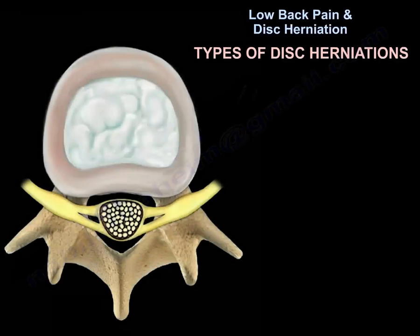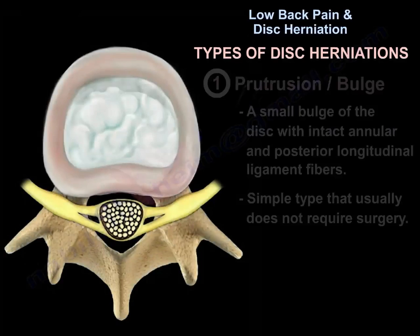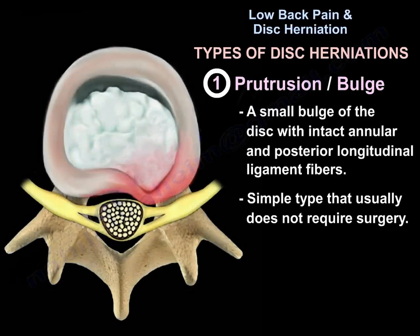There are three types of disc herniation. The first type is protrusion or bulge. This is a small bulge of the disc with intact annular and posterior longitudinal ligament fibers. This type is simple and usually does not require surgery.